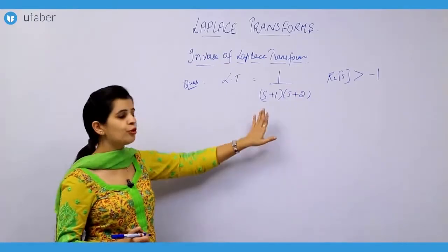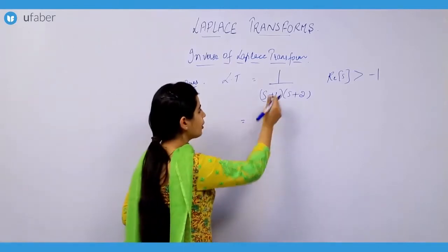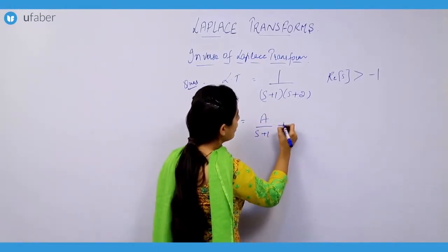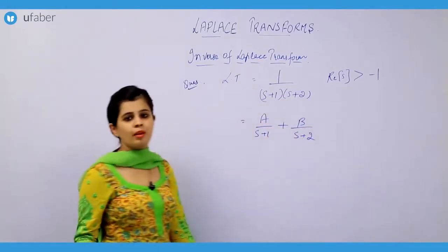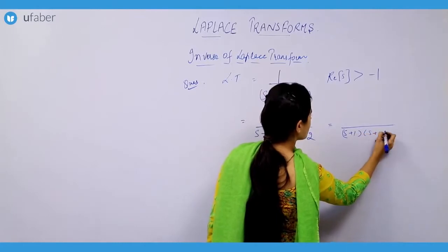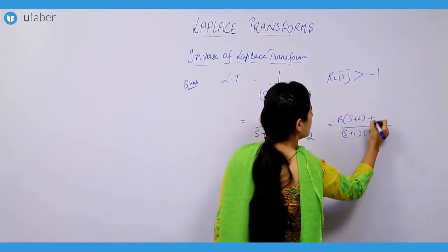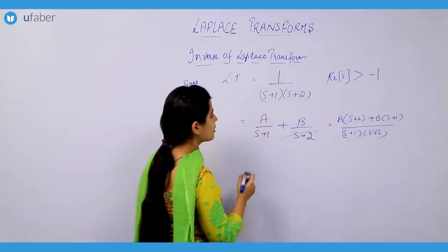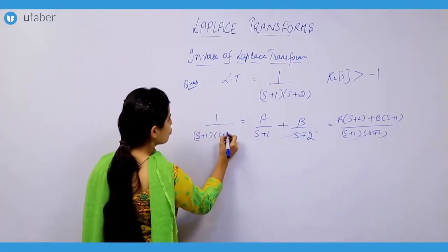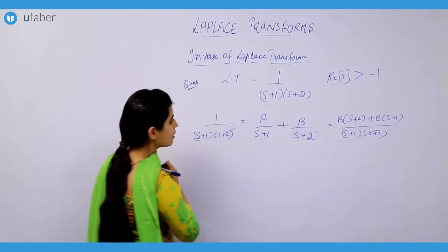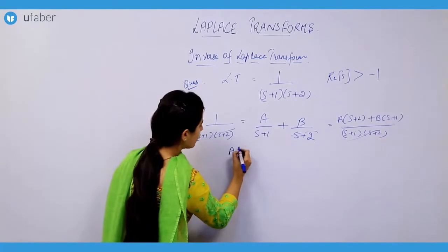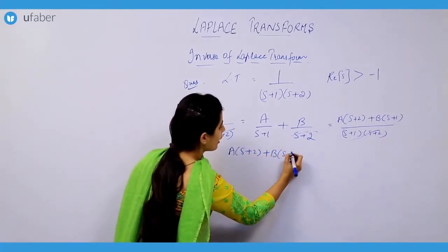This is an easier method and you are going to use this in your exam. You can very easily make the partial fractions — it can be split as A/(s+1) plus B/(s+2). Then you can write: 1/[(s+1)(s+2)] equals [A(s+2) + B(s+1)] / [(s+1)(s+2)], which gives us A(s+2) + B(s+1) = 1.